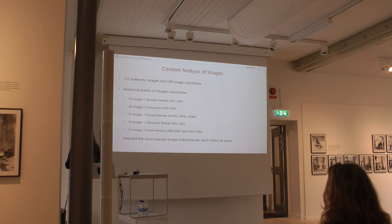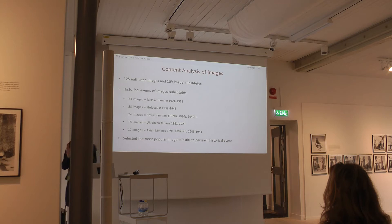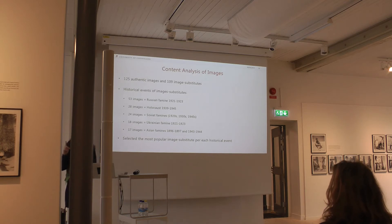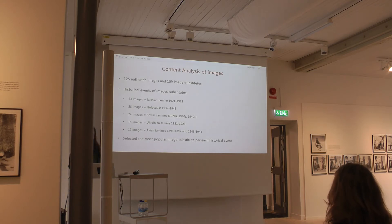There were also three other kinds of events: Soviet famines that were very difficult to verify, from the 1920s, 1930s, or 1940s; a Ukrainian famine from the 1920s, ten years earlier; and Asian famines like the Madras famine or Birkal famine. From each of these categories I selected the single most popular image and made an in-depth analysis.